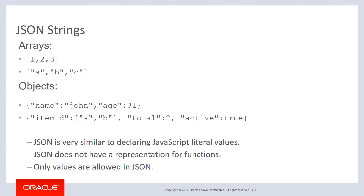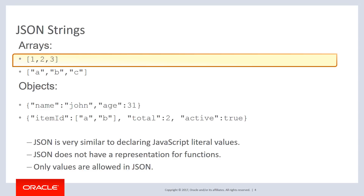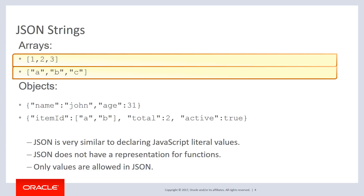Here are some examples. The first one shows an array of numbers, which points out that you can use numbers in a JSON text file — that's important to know. The second example shows that we can use strings. This array of strings just has one character, but strings could be any length, so there's no limitation on that.